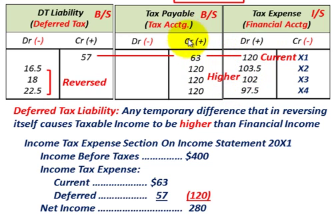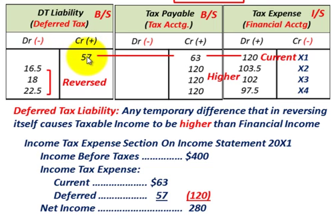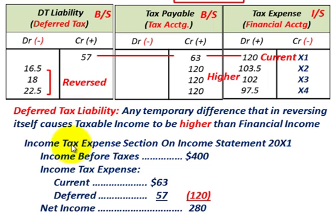The difference between your tax expense credits and tax payable requires a balancing debit in later years — that's the reversal. We started with a credit of $57,000 in the deferred tax liability, and it reversed out over the next three years until reaching a zero balance.